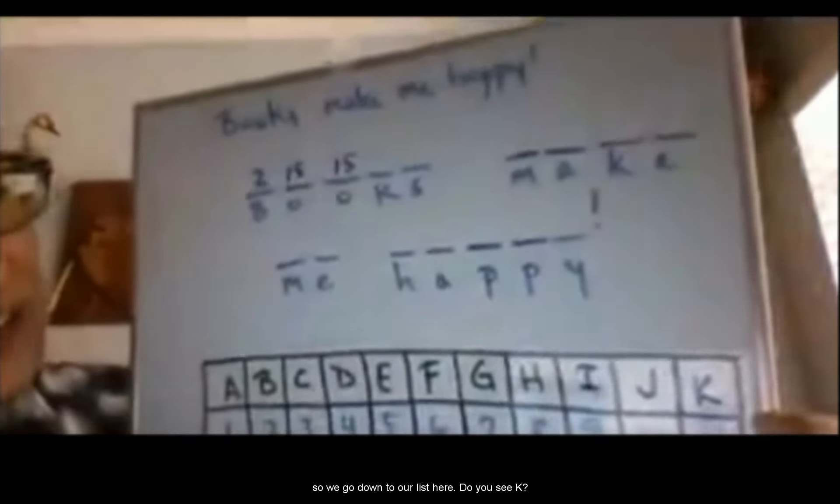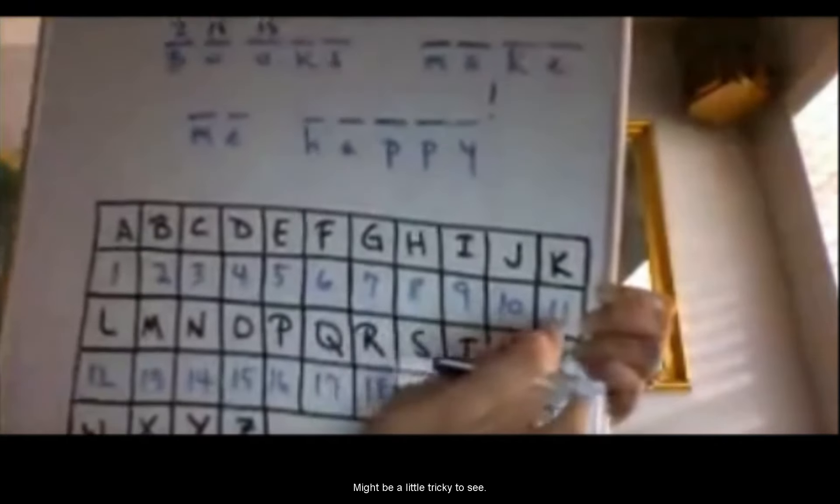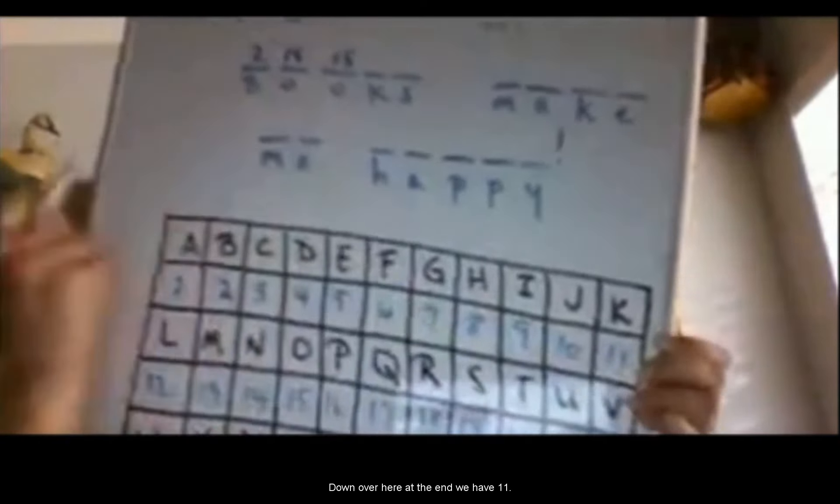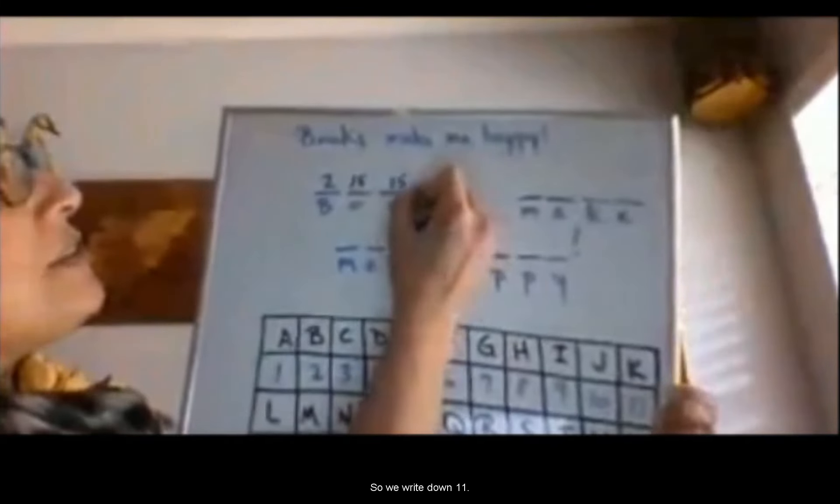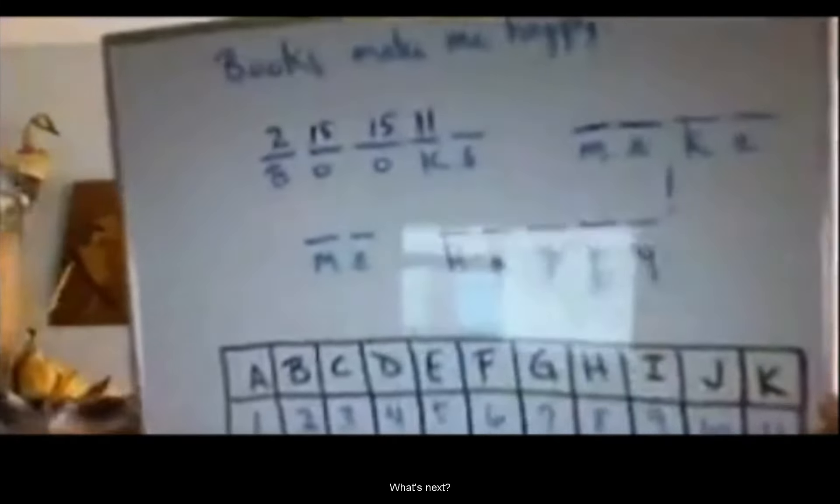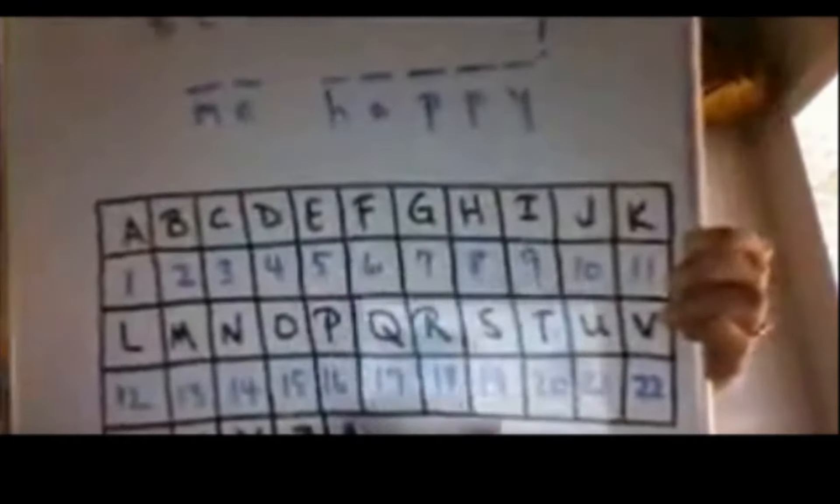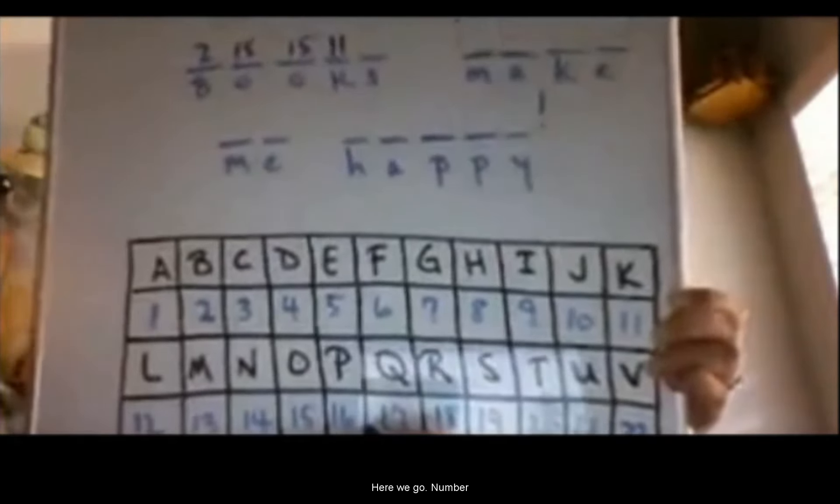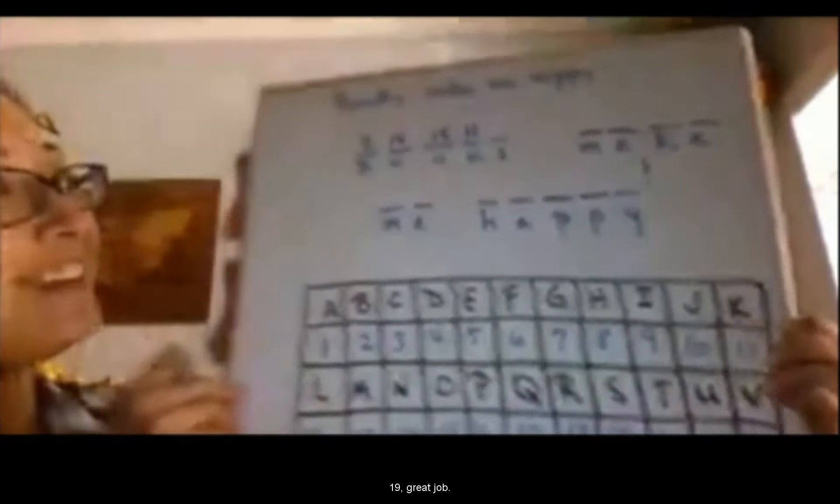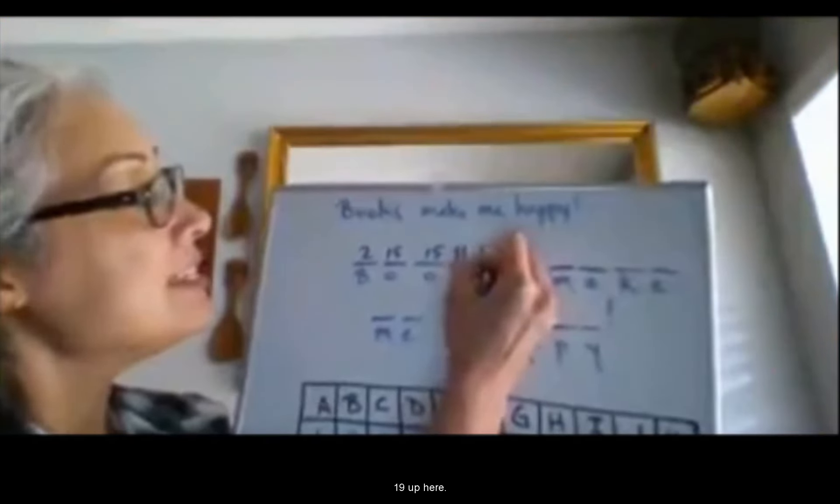What's the next letter? K. Right. So we go down to our list here. Do you see K? Might be a little tricky to see. Down over here at the end, we have 11. So we write down 11. What's next? S. Okay. So let's find our S. Here we go. Number 19. Great job. So 19 up here.